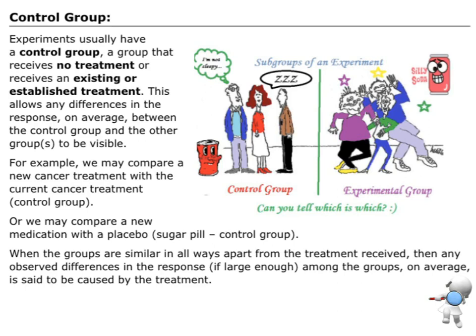So control group. This is one of the big ideas. Experiments usually have a control group and that group either gets no treatment or gets an existing treatment. And then we are looking for the differences between those groups.